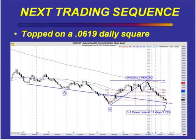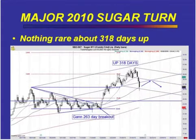Where did NatGas top? It topped about six weeks later, when the daily square reading was 0.0619. So one reading led to the next, and then we were back in the bear market again. Then there was a one-to-one relationship down at that particular low, it bounced again, and it just kept going down.